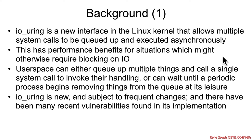There are two fundamental ways io_uring can be used. Either user space queues up a bunch of things and calls a single system call to tell the kernel to handle them, or it can queue them up and wait for a periodic kernel thread that polls the queue and handles entries as it finds them. io_uring is new and subject to frequent changes and bugs, and this vulnerability is one of them.